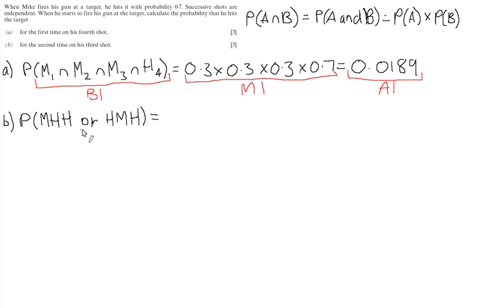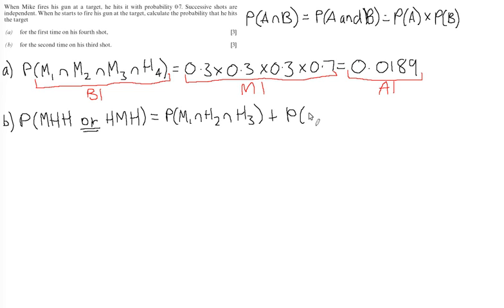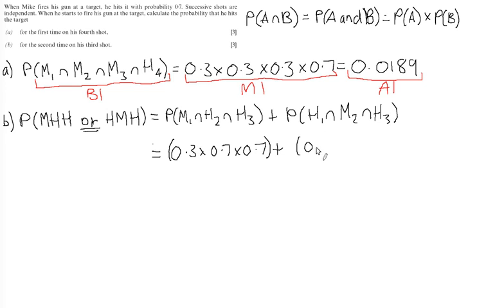Since one event or another can happen, these are mutually exclusive outcomes, so we can total their probabilities. We need the probability of miss-hit-hit plus the probability of hit-miss-hit. Multiplying the individual probabilities: 0.3 × 0.7 × 0.7 plus 0.7 × 0.3 × 0.7, which gives a total probability of 0.294.